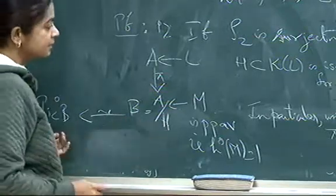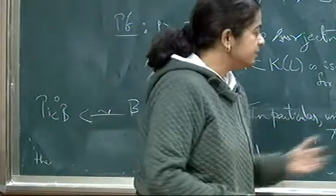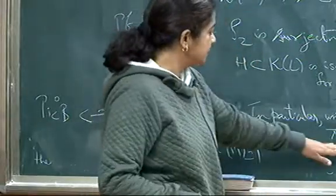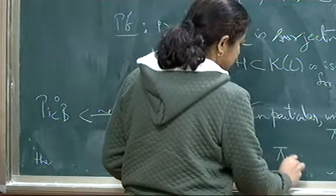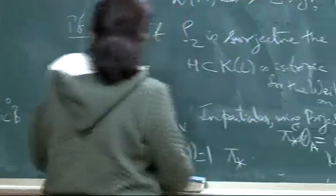You can take its image. So you get the line bundles of degree 0. So pi lower star of this guy is this. So in particular,